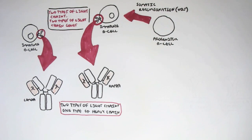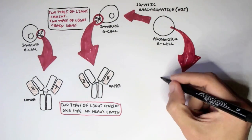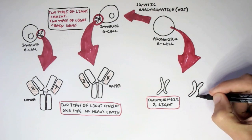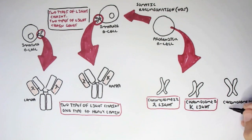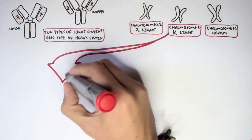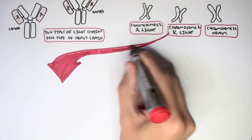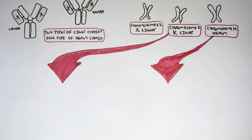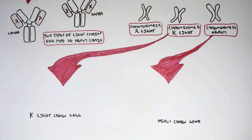Within a progenitor B cell, chromosome 22 has the lambda light chain gene, chromosome 2 has the kappa light chain gene, and chromosome 14 has the heavy chain gene. The mixing of these two types of light chains with the heavy chain allows for diverse antibody types.